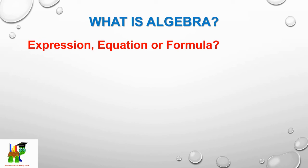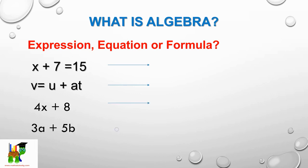Now let's see if you can determine whether they are expression, equation, or formula. Let's look at the first one: x + 7 = 15. Is that an equation, expression, or formula? The second one is v = u + at. The third one is 4x + 8, and the last one is 3a + 5b. Now I want you to press the pause button while you identify what these are and press play again when you want to see the answers.